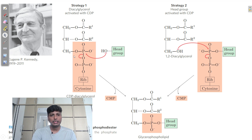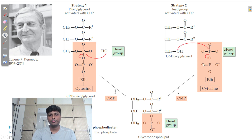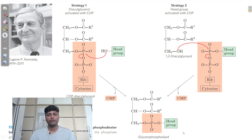The second strategy is that CDP — cytidine diphosphate — will first attach to the head group, and then this entire structure will attach to the OH group of 1,2-diacylglycerol. So in summary: one method has 1,2-diacylglycerol attaching to CDP first to form CDP-diacylglycerol, while the other has CDP attaching to the head group first before attaching to 1,2-diacylglycerol. In both strategies, one CMP is removed and a particular phospholipid is formed.